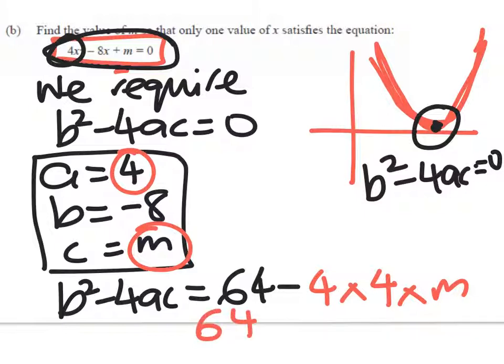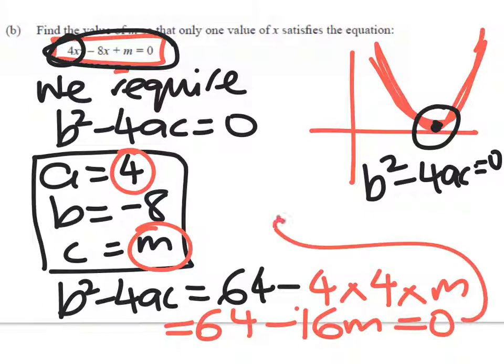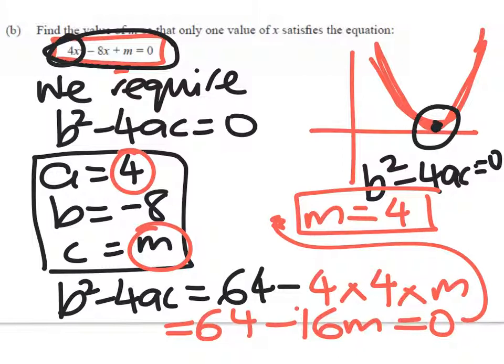b squared minus 4ac is equal to 64 minus 4 times 4 times m. So 64, which is 64 minus 16m. And that has to equal 0. So we get m equals 4. So that's my answer for that one there. And I'm pretty sure that's a merit question. I'm going to show you on the next slide another way to do that, which involves thinking about what pattern is going to give me this. Most of you will probably find it easiest to use the discriminant, and that was pretty fast. But I'll do another way as well.